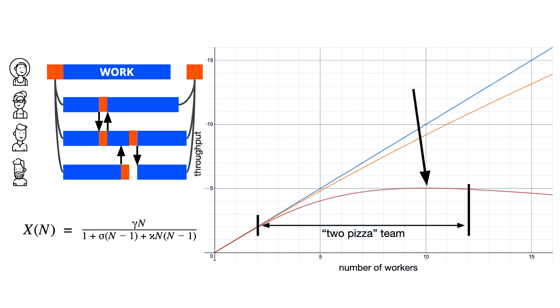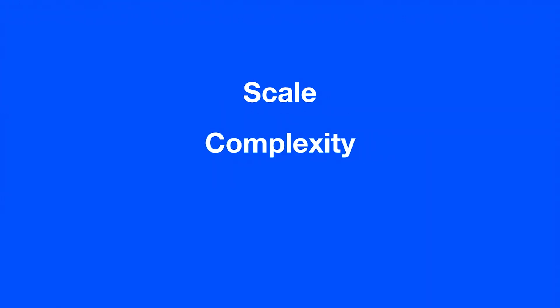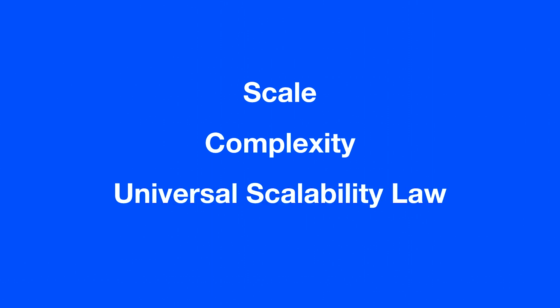We're not going to get exact numbers out of this formulation, but what we need to take away is that coordination kills throughput — and it's not a lot of coordination. Just a tiny, tiny bit kills a lot of throughput. I also want to highlight the range of a two-pizza team, which typically is seven plus or minus five, and this is kind of where it falls on the universal scalability law graph. So to recap: scale matters, complexity has cause and effect knowable only in hindsight with every action changing constraints, and the universal scalability law shows coordination kills throughput.